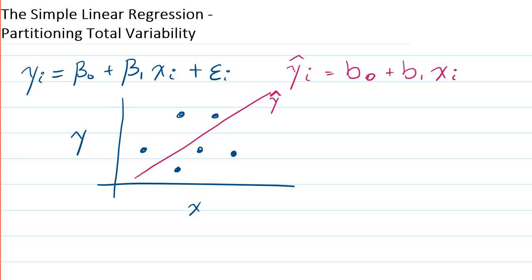So now thinking about our variability, if we were to take each observation and subtract off the mean of y, that would tell us something about the variability of y. That's actually called the total variability of the response variable.